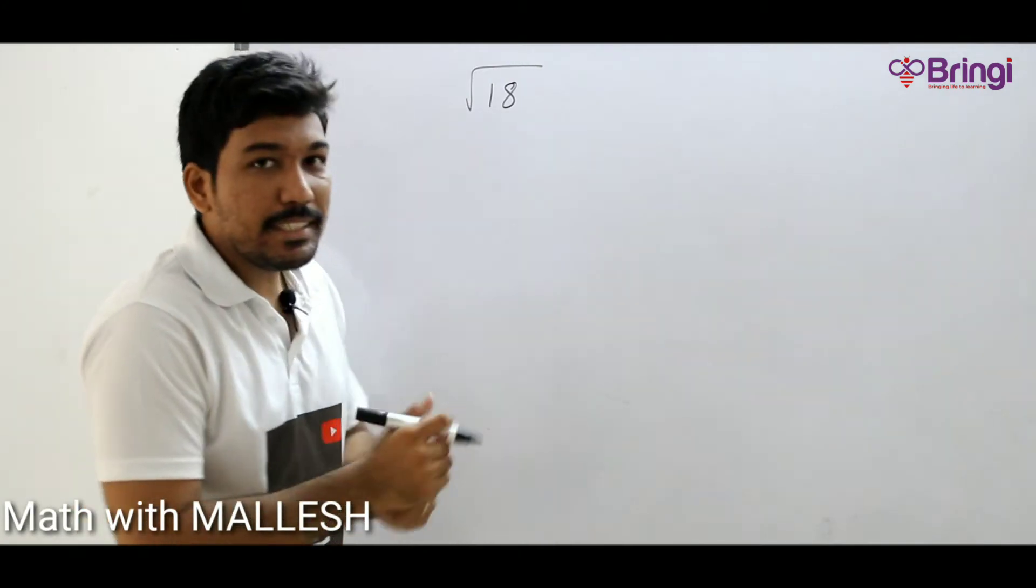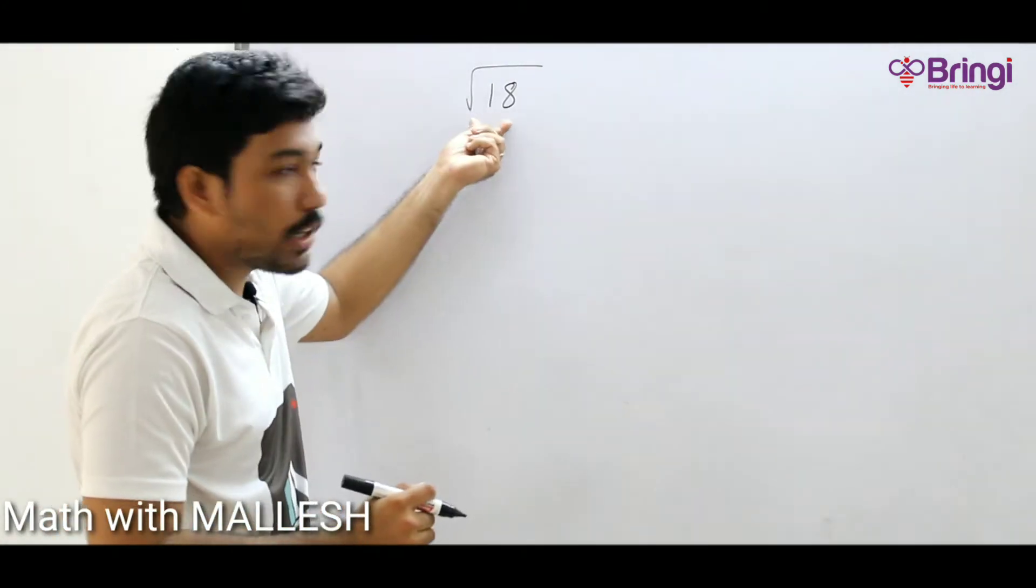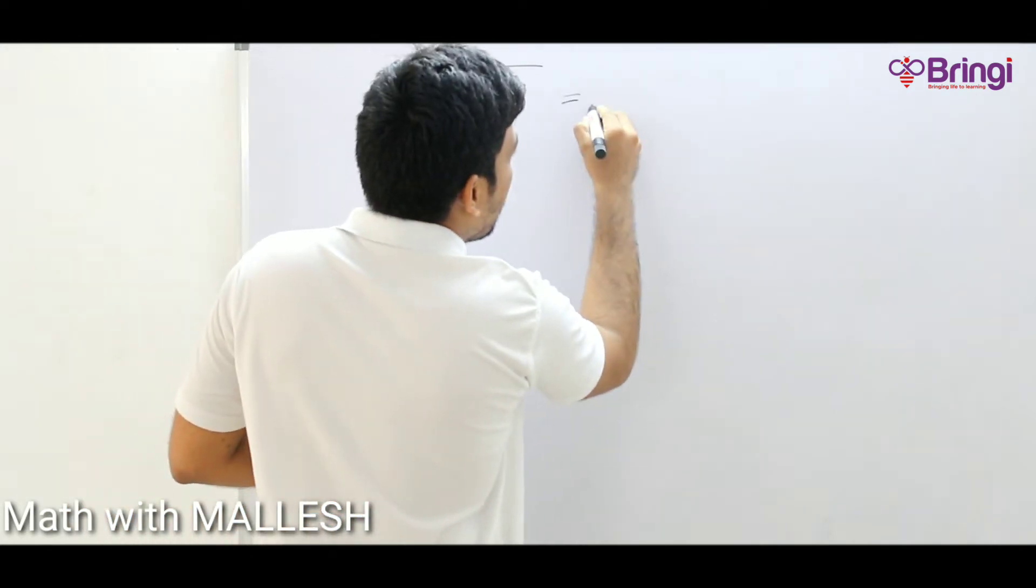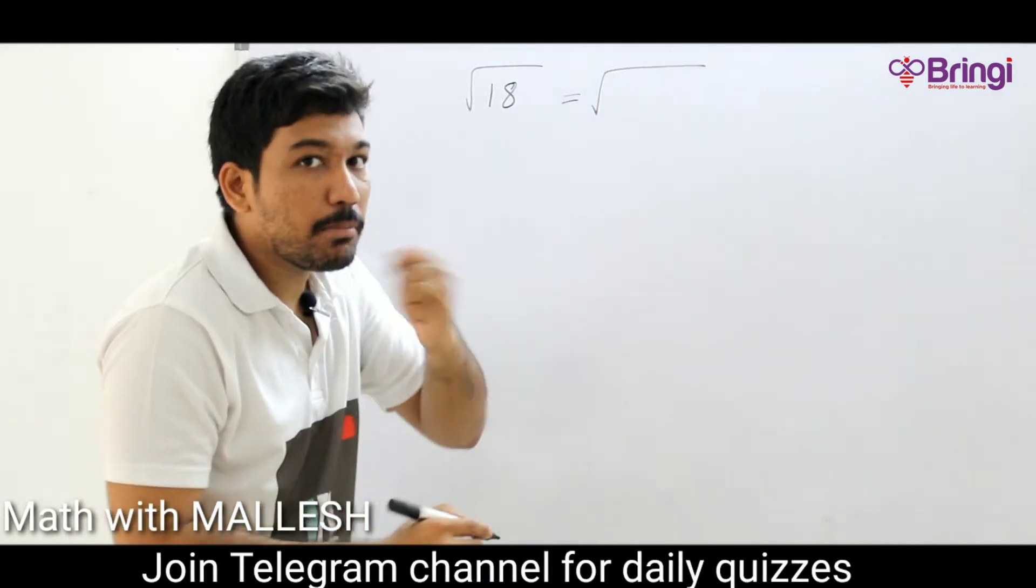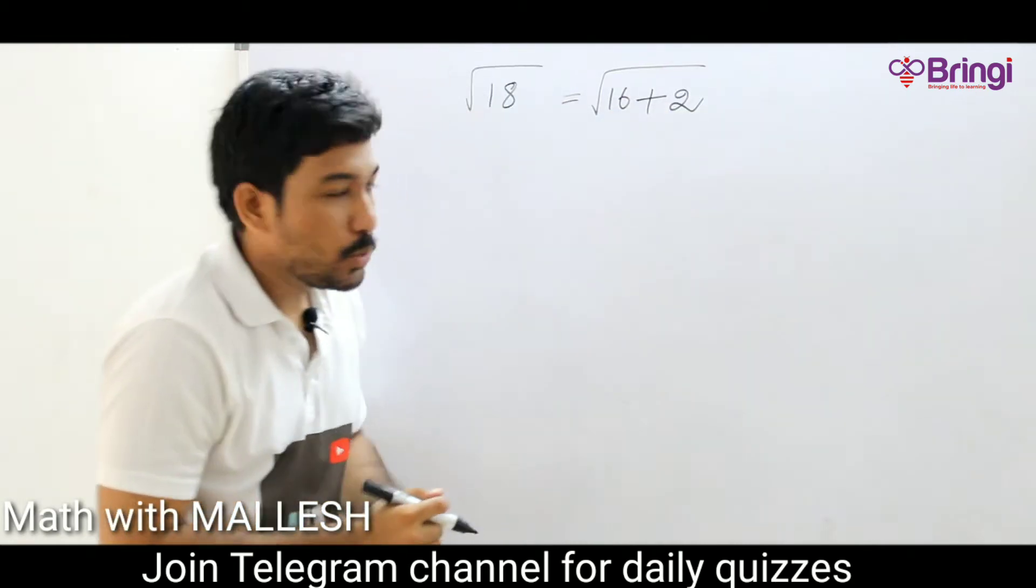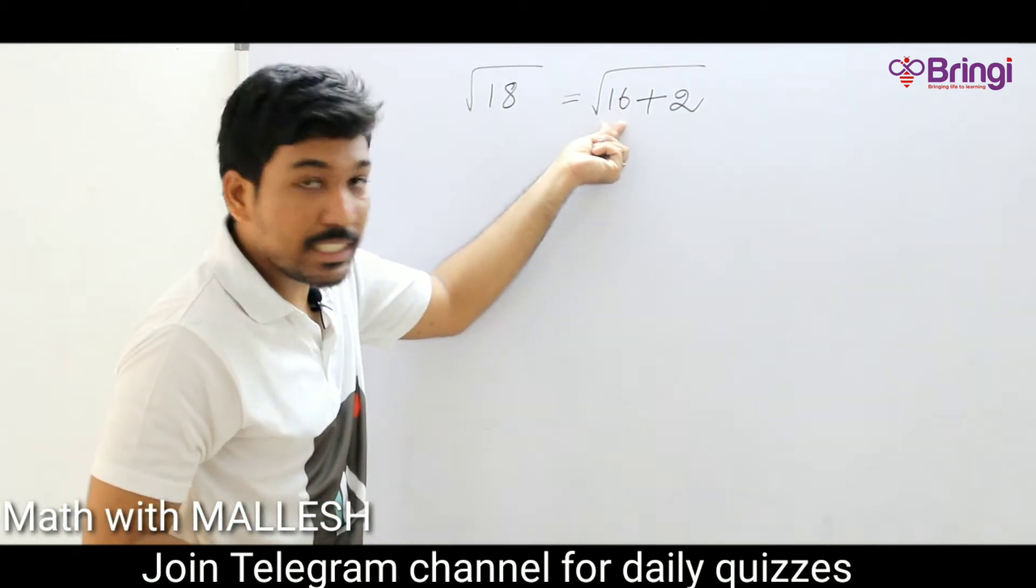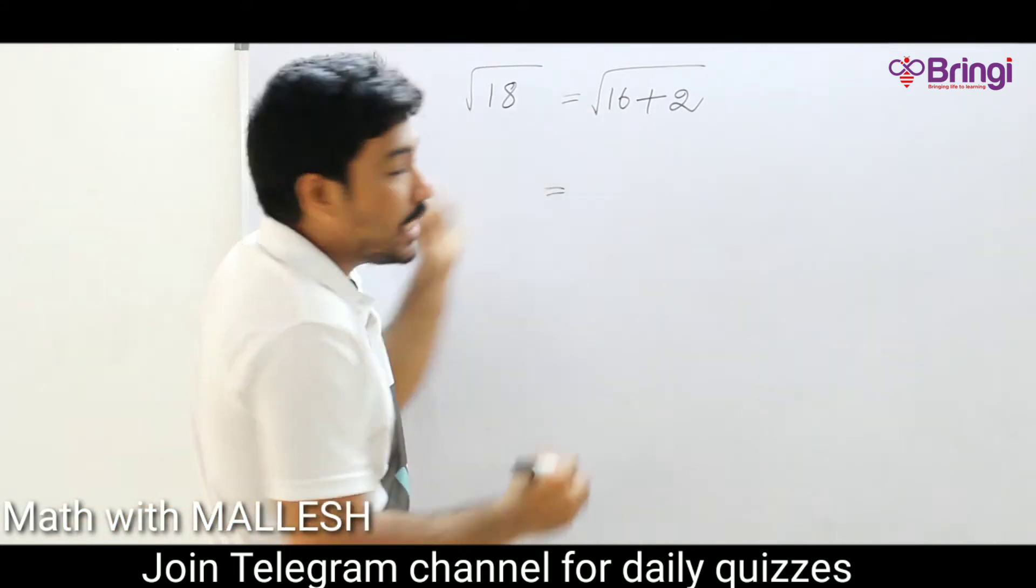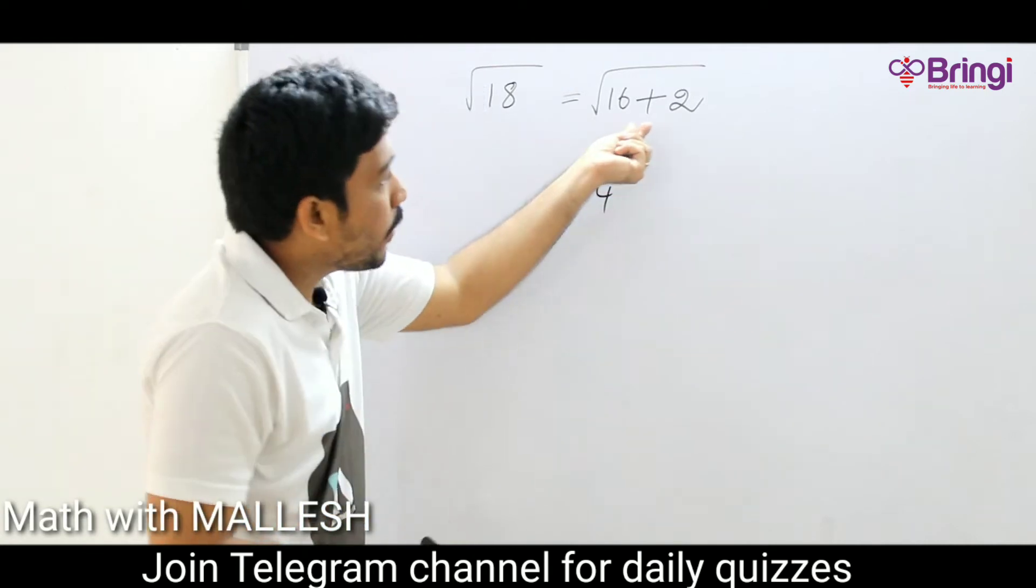Root 18. Root 18 is a non-perfect square root number. Now we are finding the value of root 18. First step, write as a sum of two numbers. I am writing 16 plus 2. Why 16 plus 2? 16 is a perfect square root number and the remainder is 2.